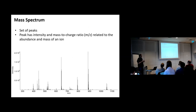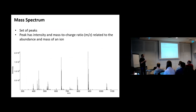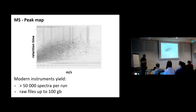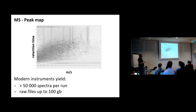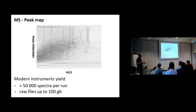What the mass spectrometer gives us are so-called mass spectra. Each peak has an intensity value and a mass-to-charge value. The intensity relates to the abundance of the analyte or ions measured, and the m/z value to the mass-to-charge ratio. Modern instruments record more than 50,000 spectra in a single run. If you stack these spectra on top of each other, you get a so-called peak map. Such an experiment can be pretty complex — we might end up with raw files up to 100 gigabytes in size for some instruments.